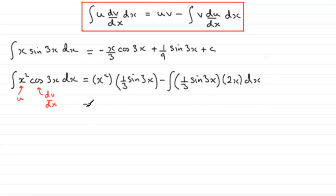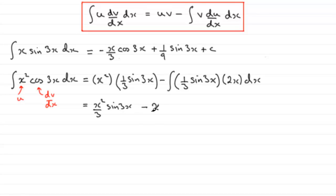We just need to clean this up. For the first term we've got x squared over 3, times sine 3x. For the second term, we can take 2 times one third — that's two thirds — out the front of the integral, giving us minus two thirds times the integral of x sine 3x with respect to x.